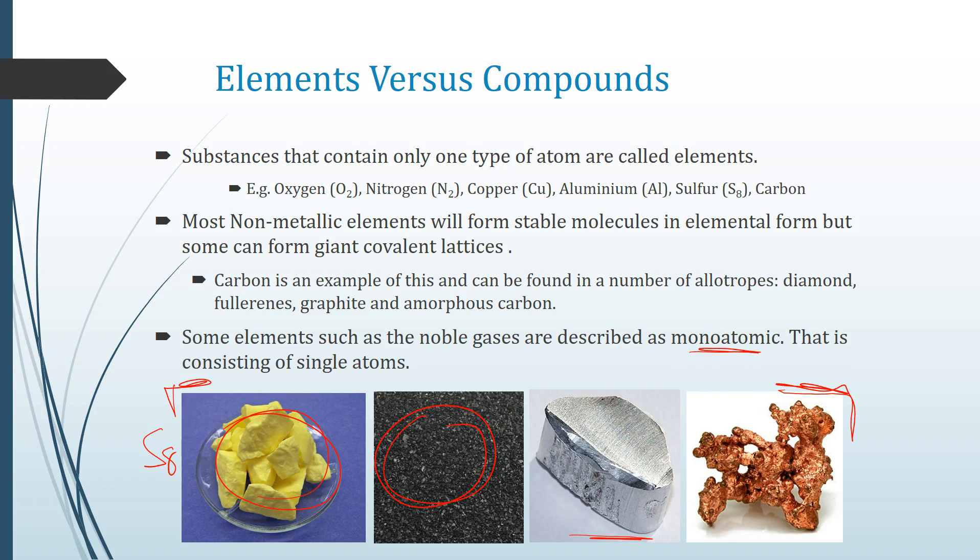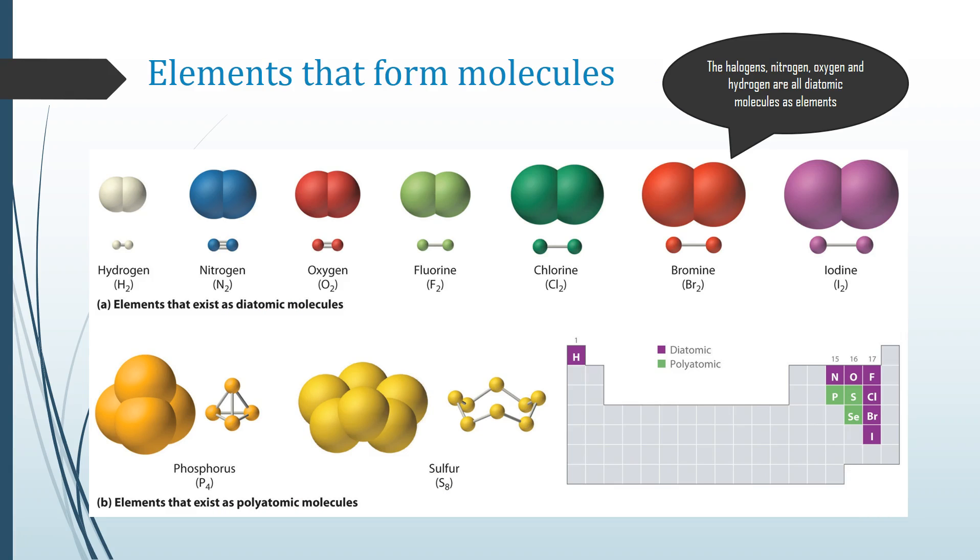You're familiar with one of those and that is diamond. It's actually pure carbon, the same as this black charcoal substance down here. They're made of exactly the same thing; they're just bonded in a different way. Some elements such as the noble gases we describe as monoatomic; that is, they form from only one atom.